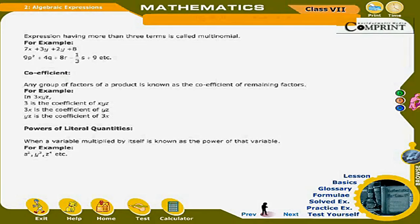Coefficient: Any group of factors of a product is known as the coefficient of the remaining factors. For example, in 3xyz: 3 is the coefficient of xyz, 3x is the coefficient of yz, and yz is the coefficient of 3x.